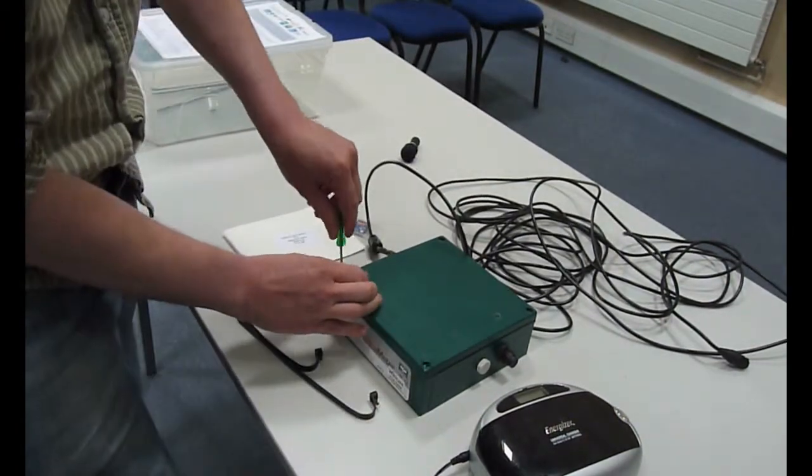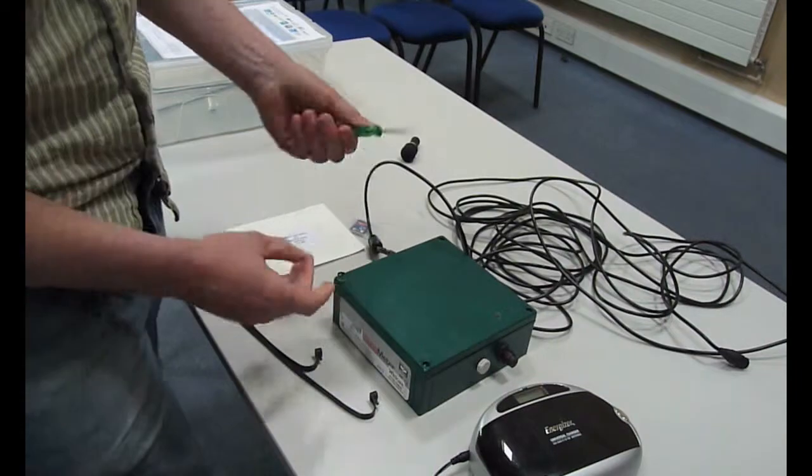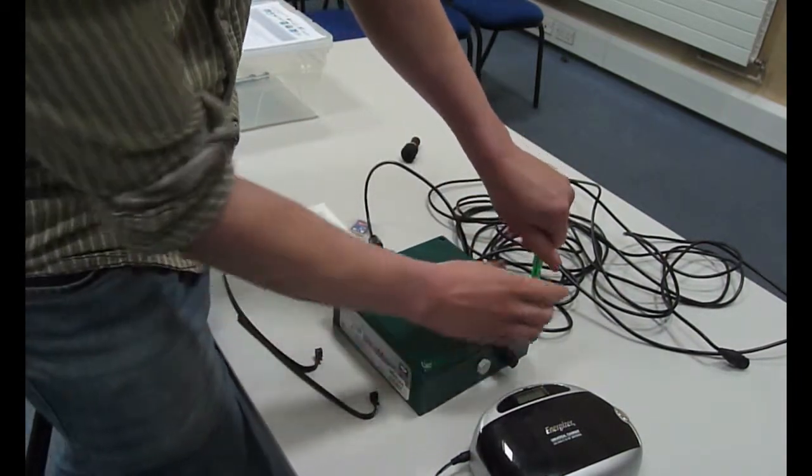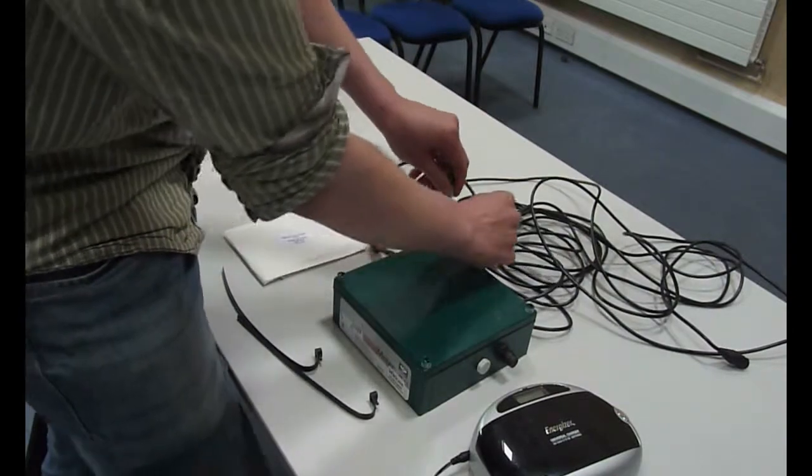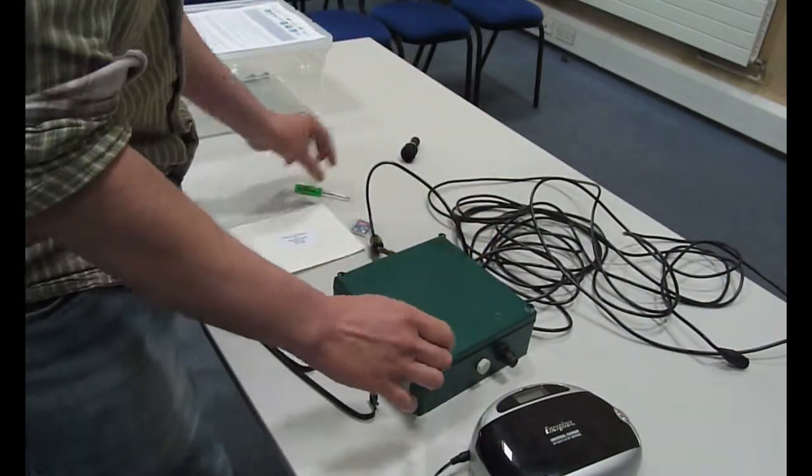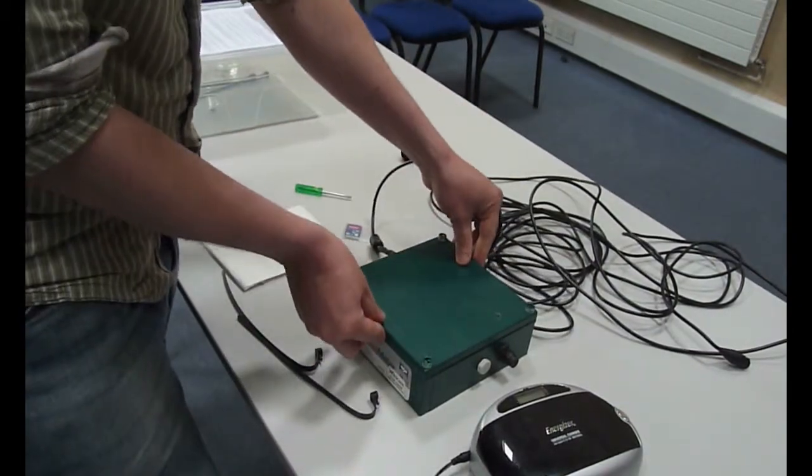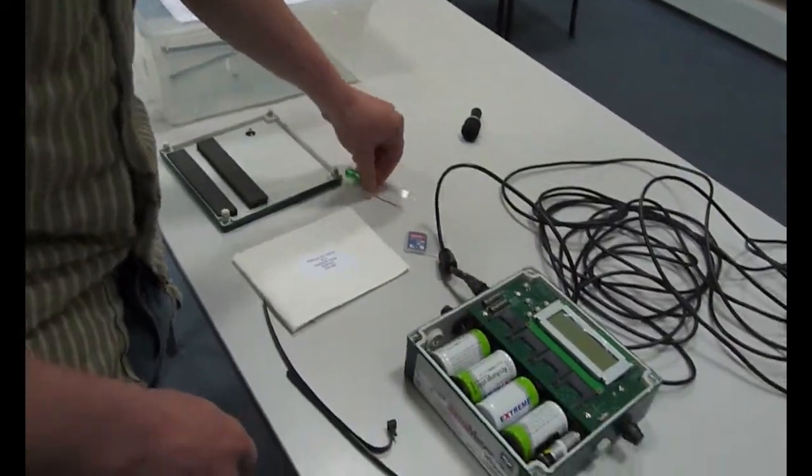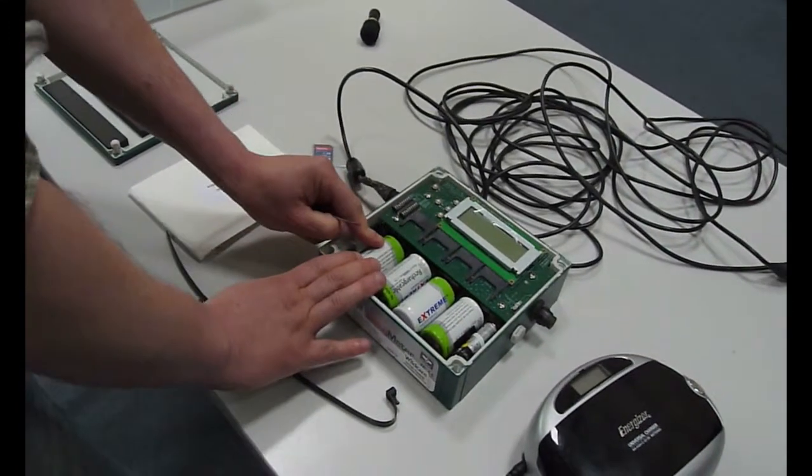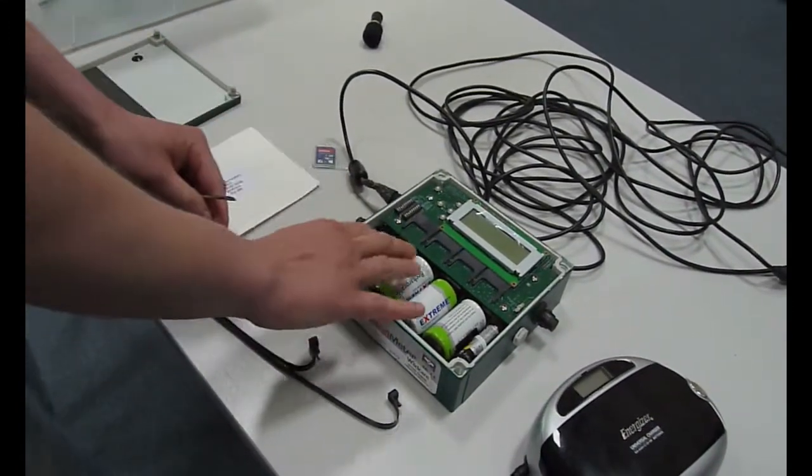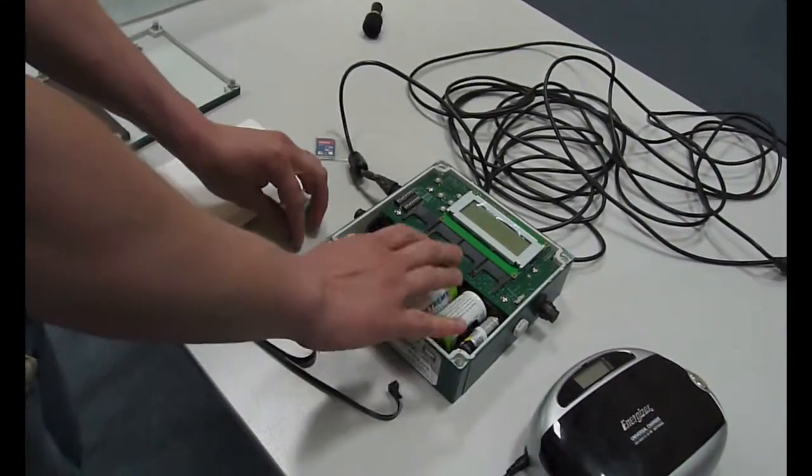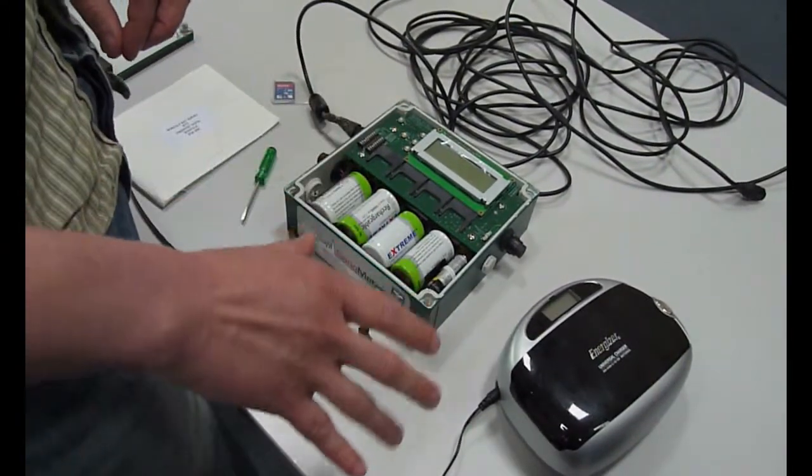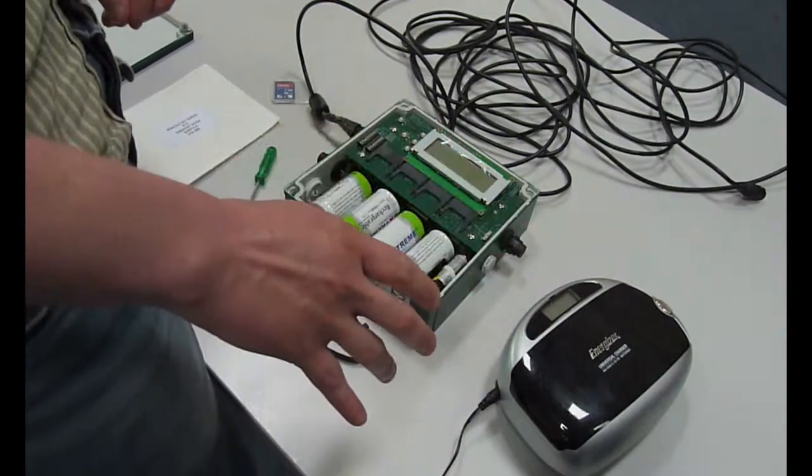When you get the detector, to get into it you're given a screwdriver. There are four screws which you unscrew at the corners. You unscrew those and the lid comes off quite easily. Then when you get a detector, you'll have four batteries already in there and these have been used by the previous person. So the idea is there's always one set of charged batteries to be used.